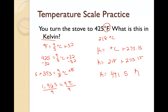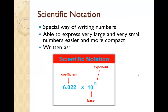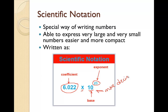Let's move on to scientific notation. Scientific notation is a special way of writing numbers — you're able to express very large and very small numbers easier and more compactly. It's written as a coefficient times a base of 10 to the exponent. Since it's base of 10, we're going to move the decimal, and that exponent tells you how many times to move the decimal.